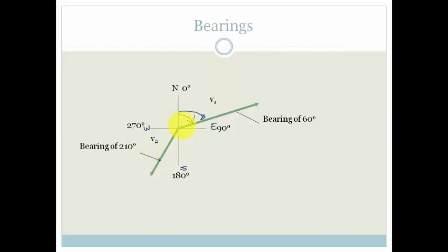Whereas, with V2, we are saying it is on a bearing of 210 degrees. In other words, it's actually 30 degrees west of south. But, from north, going all the way around, it is 210. How do we get that? That's 0, 90, 180, plus 30. That's 210 degrees. So, it's always taken from north.